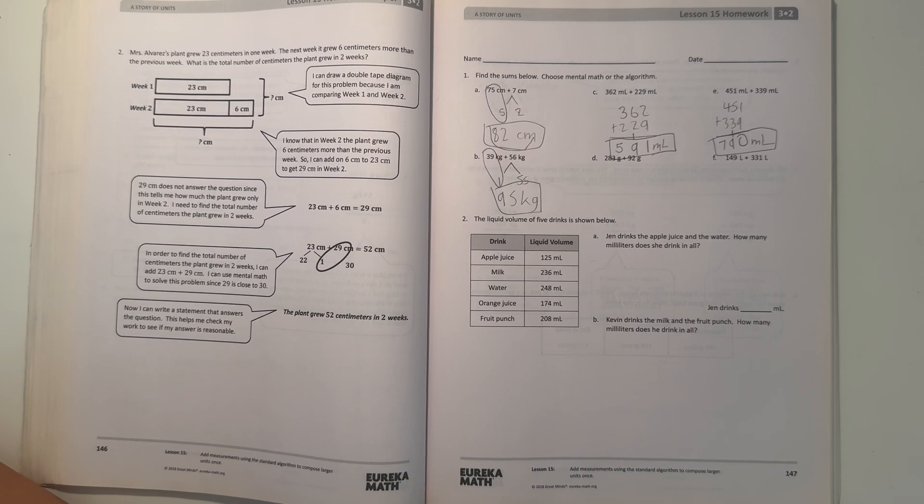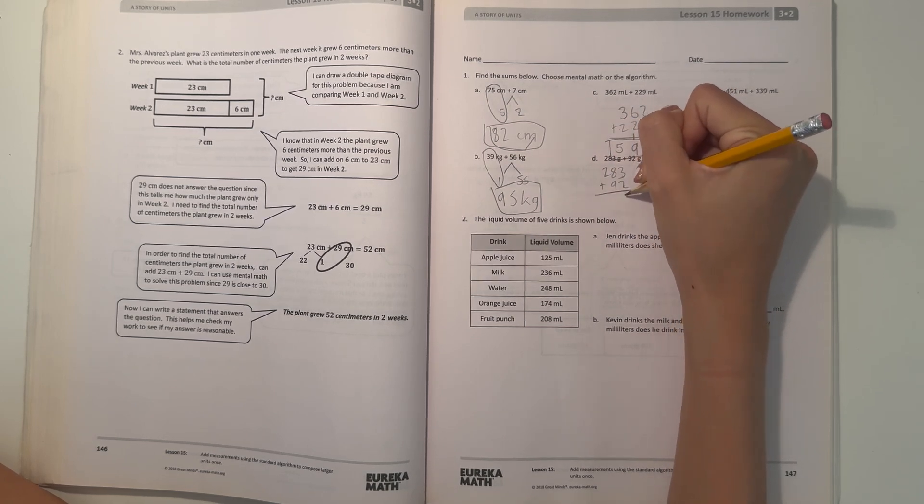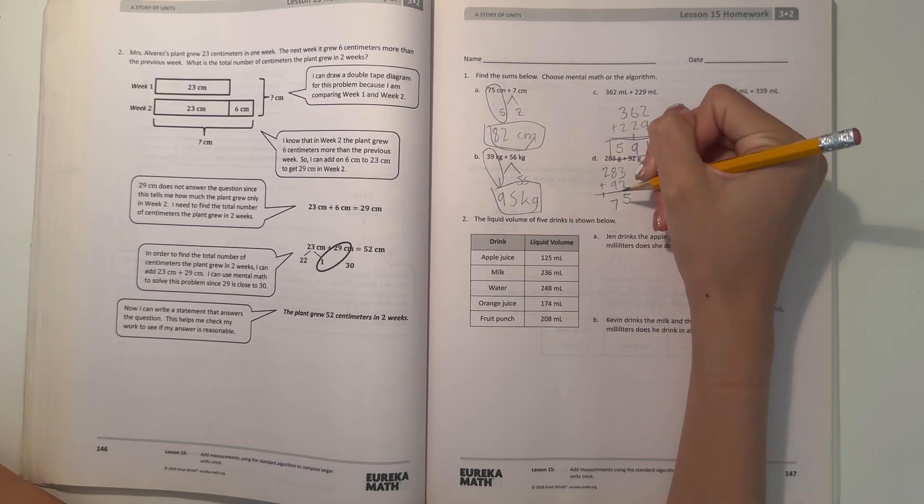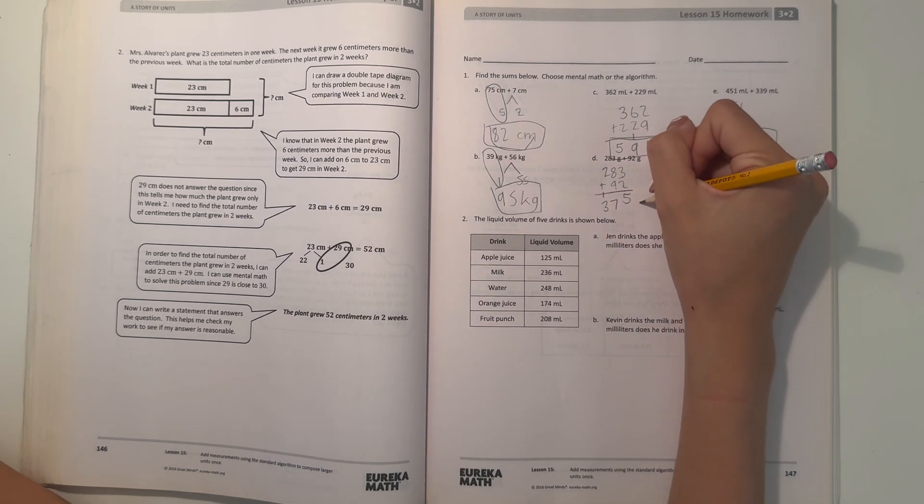Part D, 283 plus 92. Let's do the algorithm. 3 plus 2 is 5, and 8 plus 9 is 17, carry the 1. 2 plus 1 is 3. So 283 plus 92 equals 375 grams.